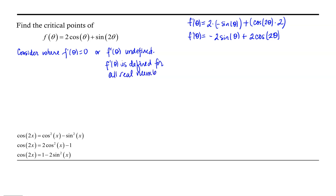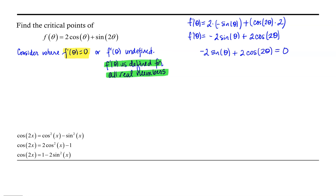Now we can simply focus our attention on values of theta that cause the derivative to equal 0. We want to know where does negative 2 sine of theta plus 2 cosine of 2 theta equal 0.